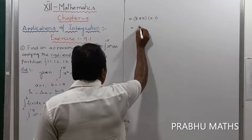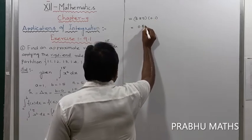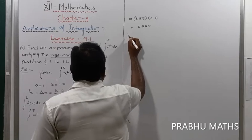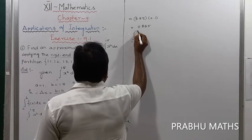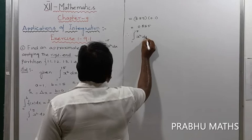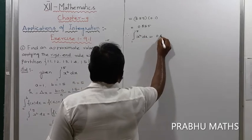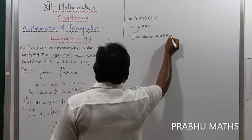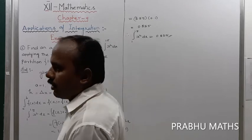Therefore, integral of 1 to 1.5 x square dx equals 0.855, which is the result.